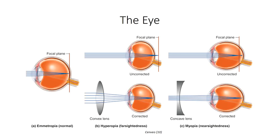The lens itself is made up of carefully aligned protein fibers that, similar to the outer cornea, are translucent to the transmission of light. In certain disease conditions, these proteins can clump together, resulting in increased opacity and cataract formation. Risk factors include normal aging, alcohol and tobacco use, diabetes, and excessive exposure to sunlight.